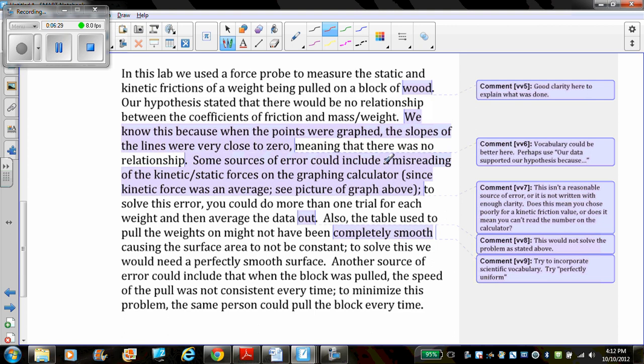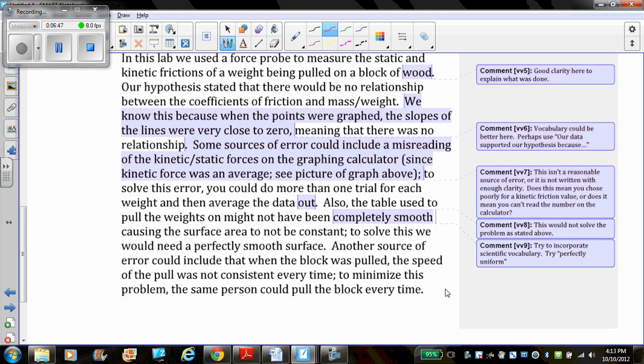Some sources of error could include a misreading of the static and kinetic forces on the graphing calculator since the kinetic force was an average. To solve this error you could do more than one trial for each weight and average the data out. Also the table used to pull the weights might not have been completely smooth causing the surface area not to be constant. To solve this we would need a perfectly smooth surface. Another source of error could include that when the block was pulled the speed of the pull was not consistent every time. To minimize this problem the same person could pull the block every time.